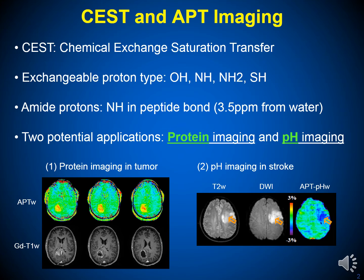One application of APT MRI is detection of gliomas, because of the relatively large mobile protein content in tumor tissues. Another application is pH imaging of stroke, because the amide proton exchange rate is pH-dependent in the physiological pH range.